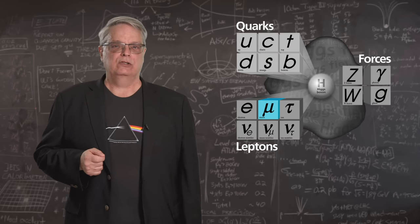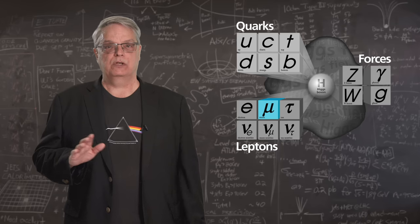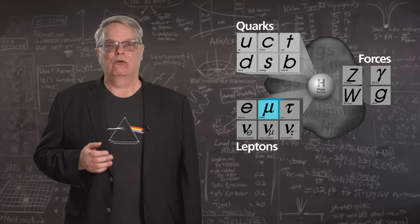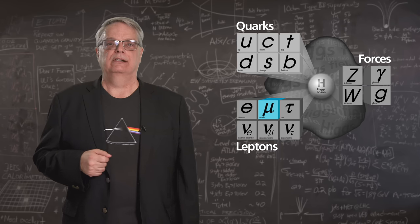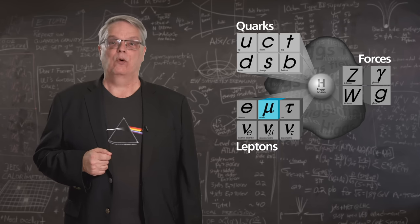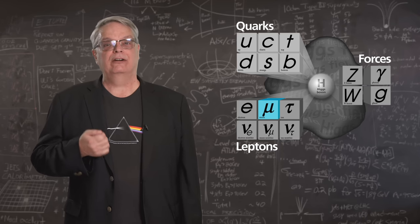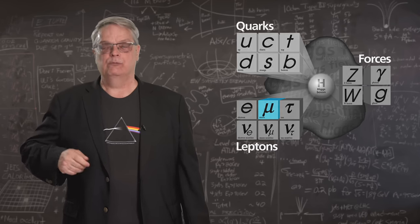The muon is essentially a cousin of the electron. It's much heavier than the electron, and it lives for a bit over two millionths of a second. That's very short, but it's long enough. However, most importantly, it interacts with matter fairly weakly and in very predictable ways.